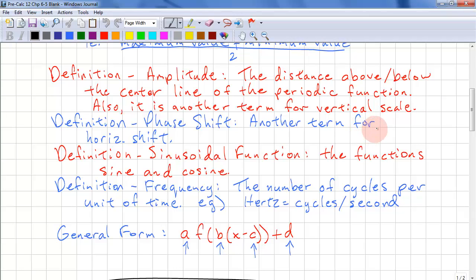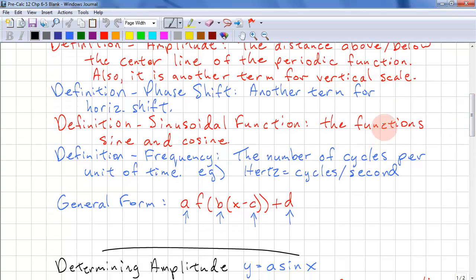Our next definition is phase shift, which is another term for horizontal shift. Our next term is sinusoidal function. There's only two sinusoidal functions: sine and cosine.